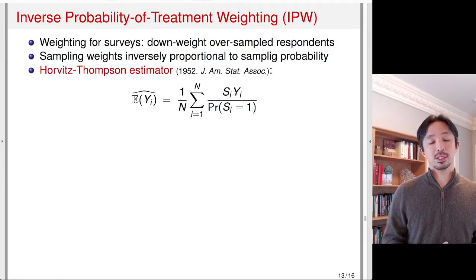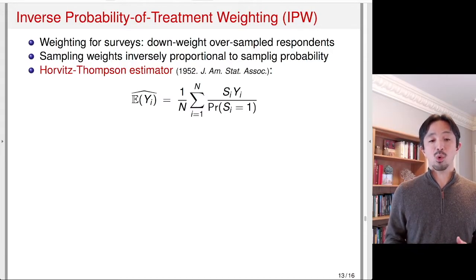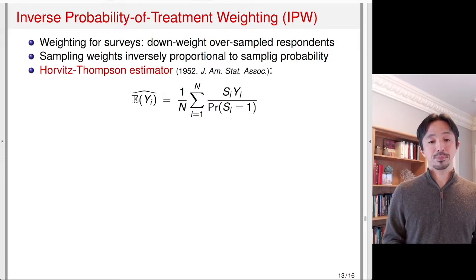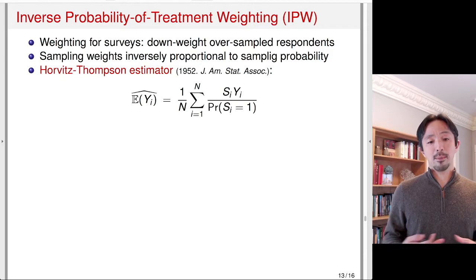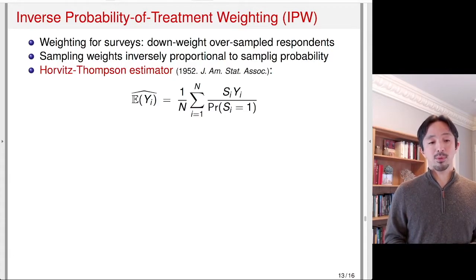Here, n is the population size in the binary population framework, and s_i is the sampling indicator — s_i equals 1 if you are being sampled, s_i equals 0 if you are not in the sample. The estimator used is the Horowitz-Thompson estimator, which weights each outcome y inversely proportional to the probability of being sampled, computing the sample average by weighting inversely proportional to the sampling probability.